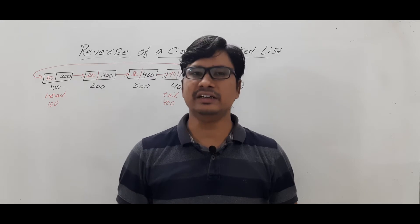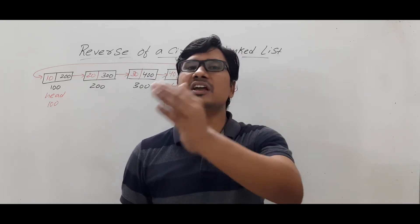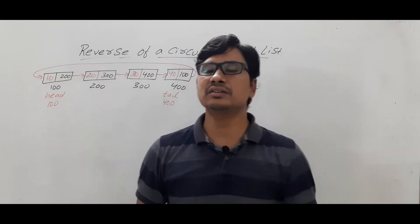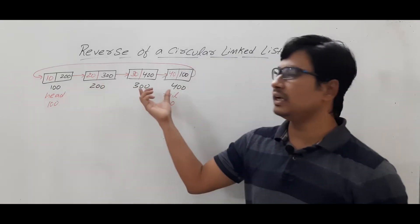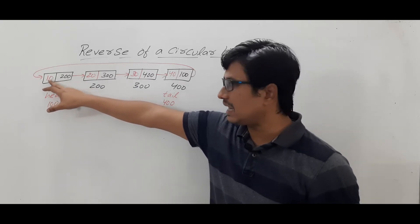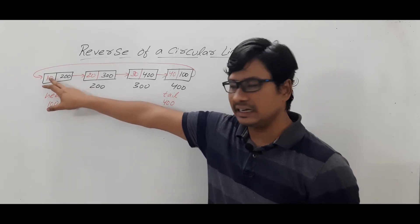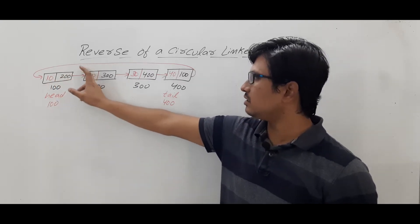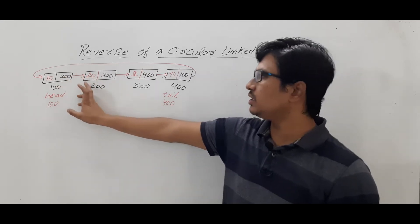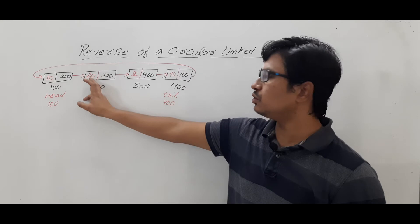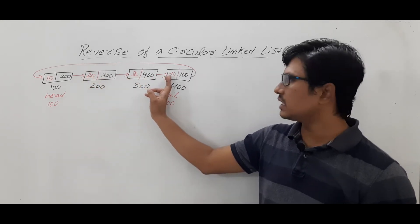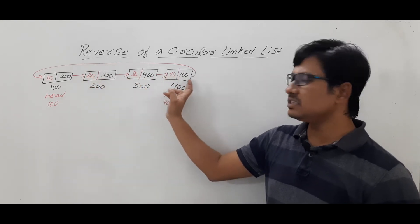A circular linked list is a collection of nodes where each node will have the data and address of the next node. For example, we have a collection of four nodes. Each node will have the data — which is 10 — and the address of the next node, which is 200, so we have a pointer pointing to that node. Similarly, this node has the data and address of the next node, and the last node is special.